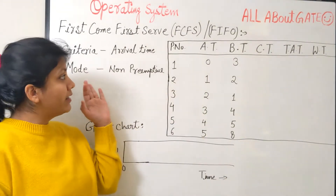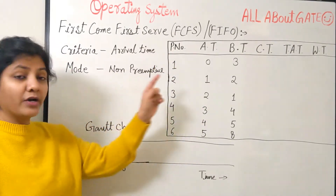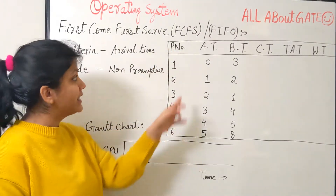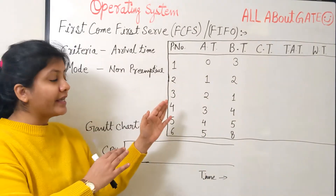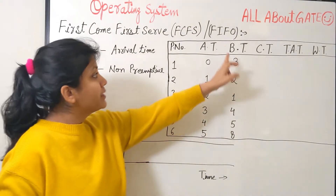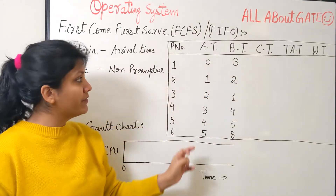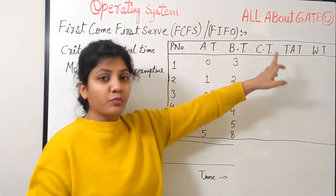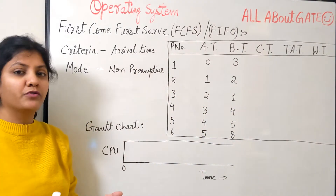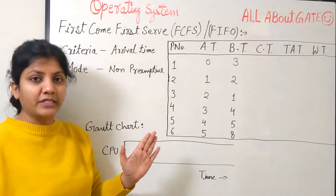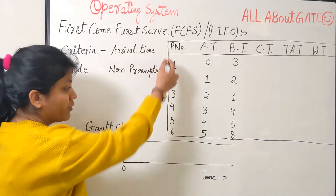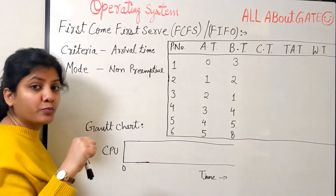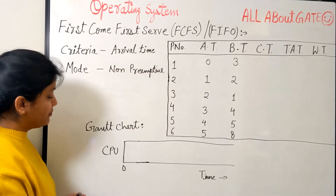For a detailed understanding, I have taken a question with a chart of process information — processes P1 to P6 with their arrival times, which is similar to what you will get in your exam. The burst time of each respective process is also given. After scheduling, we will calculate the completion time, turnaround time, and waiting time. Let's start scheduling these processes from P1 to P6 using FCFS based on arrival time.